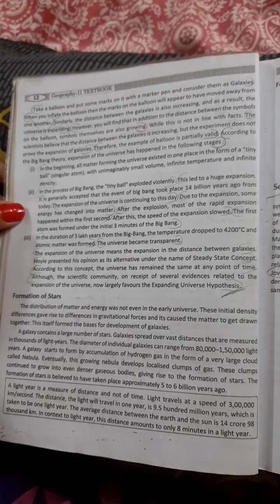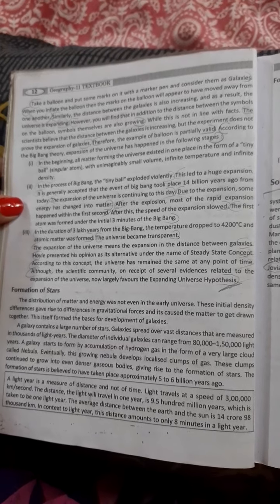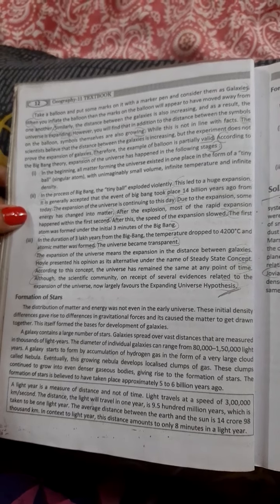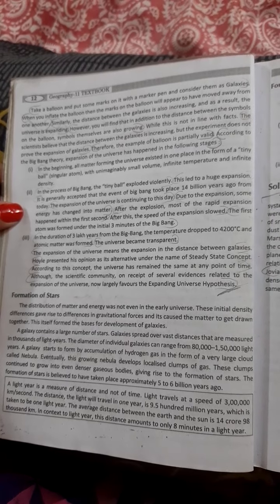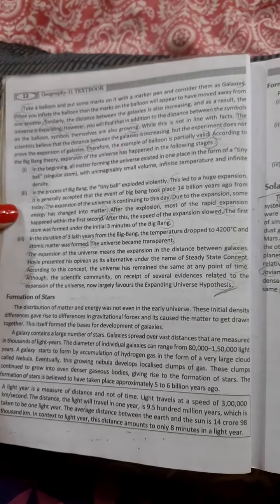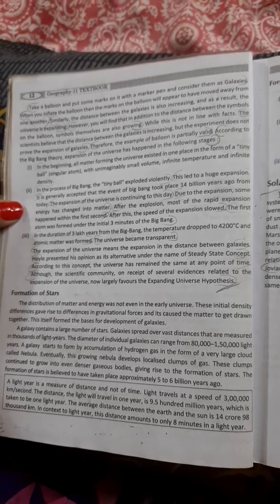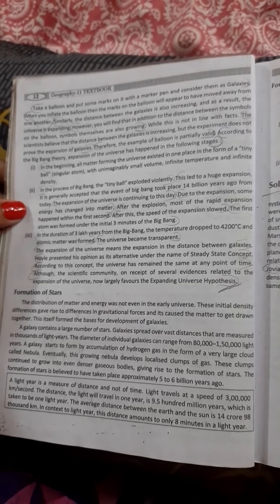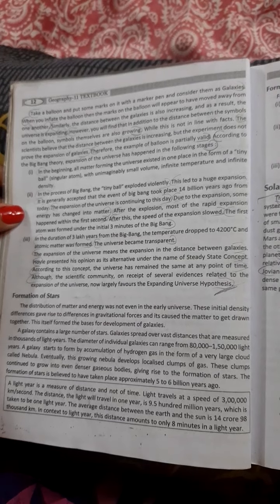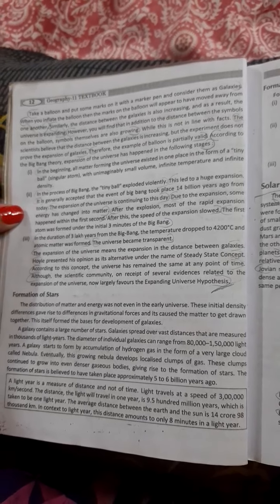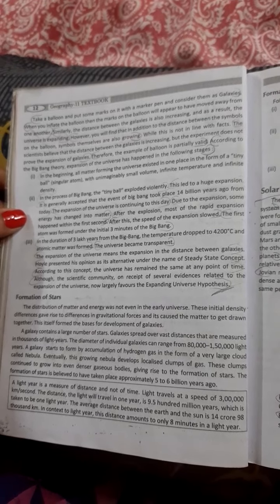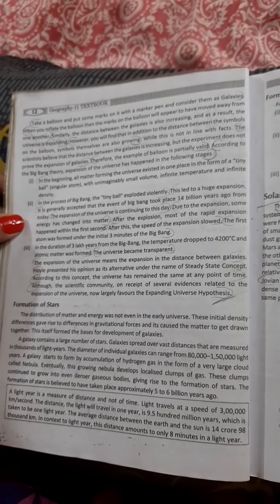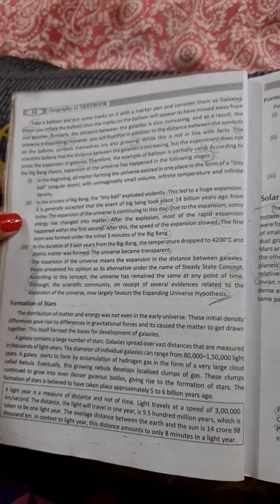A galaxy started to form by the accumulation of hydrogen gas, which happens in the form of a very large cloud called nebula. Actually, this growing nebula develops localized lumps of gases. The lumps continue to grow into even denser gases. These bodies give rise to the formation of stars. This is the formation of stars.